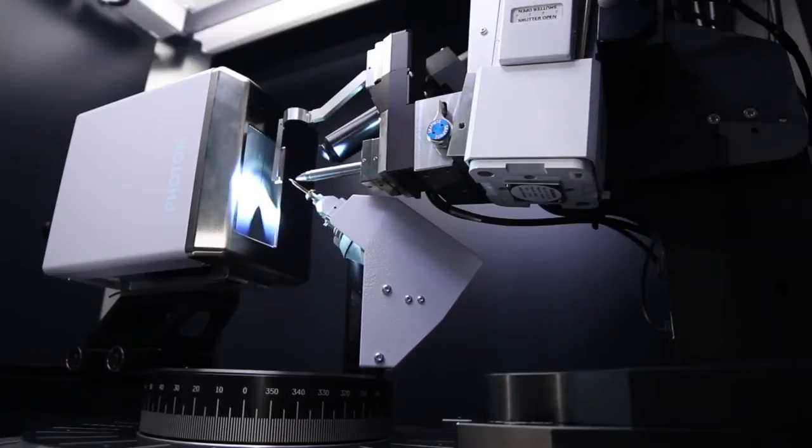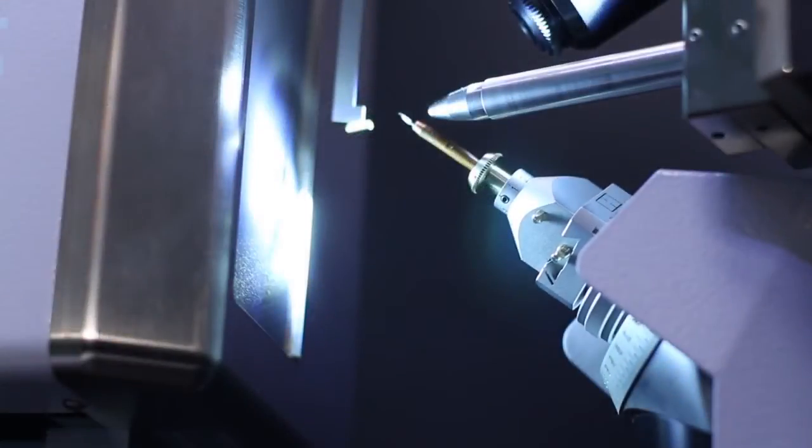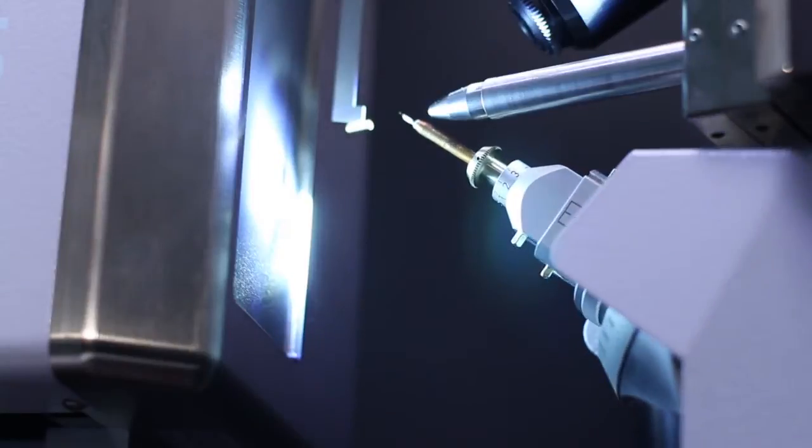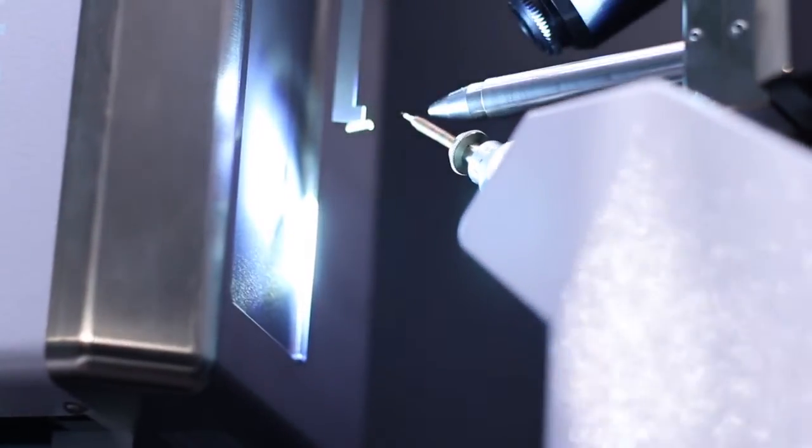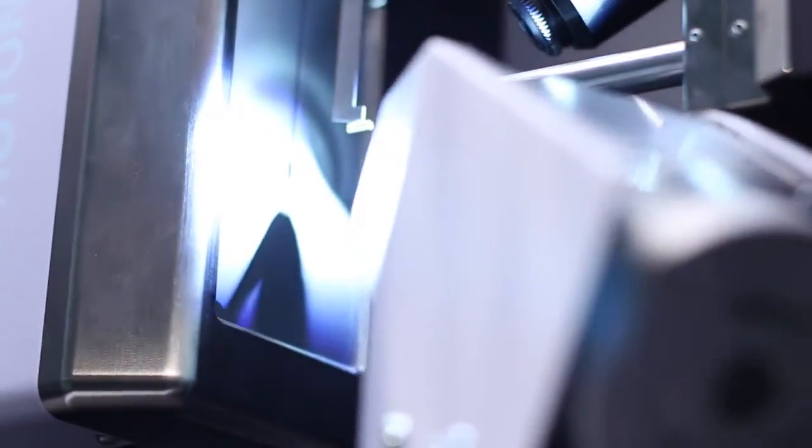The goniometer on the D8 Quest Eco is identical to the goniometer used on our other systems. You've got the whole motion of the goniometer, the DX motion, and the 2 theta swing.